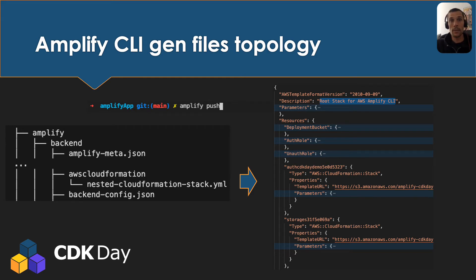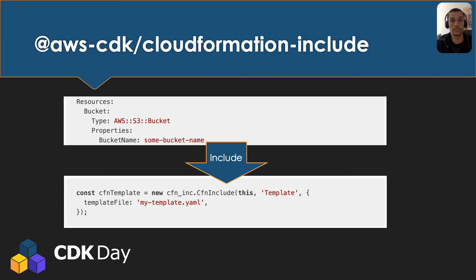Seeing that, you might think you can use all those generated files directly in your CDK app to merge your Amplify app into a CDK one — and you're right. Thanks to a great construct called CloudFormation Include, you simply point to the template you want to include and it becomes a resource like any other in your CDK app. Let's see how it looks in our Amplify case.